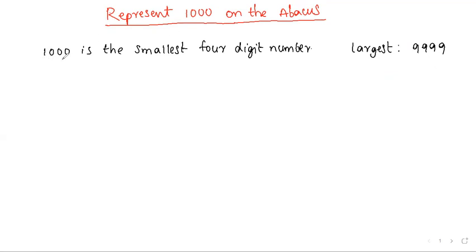The smallest four-digit number: first we put one, and the remaining three places are zeros. What is the smallest five-digit number? First we put one and the remaining four places are zeros. In this topic we will be discussing only four-digit numbers.